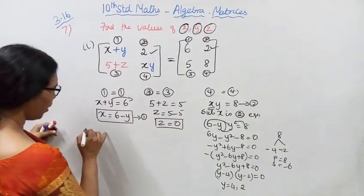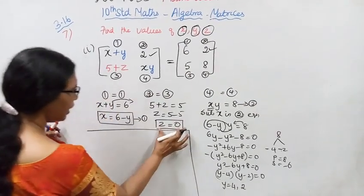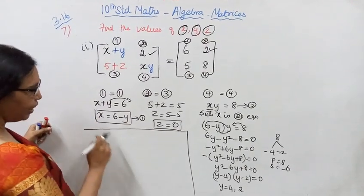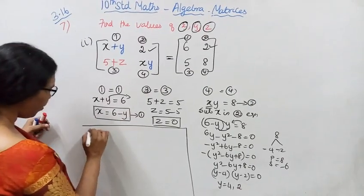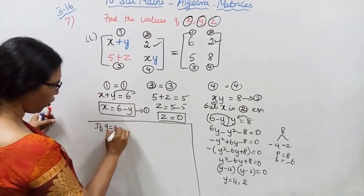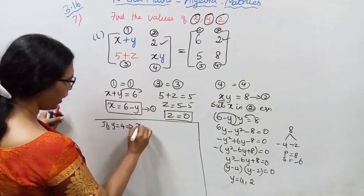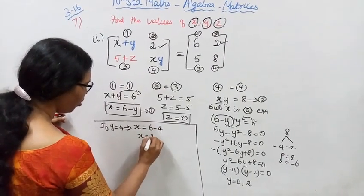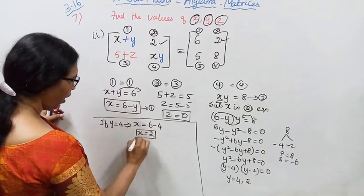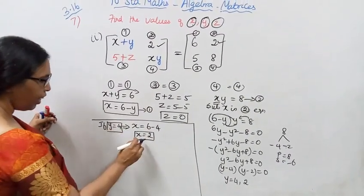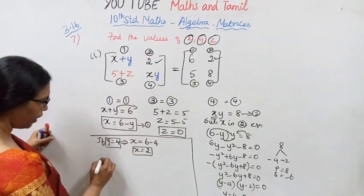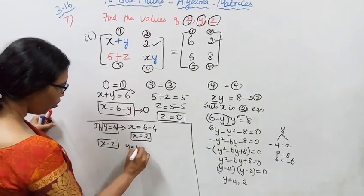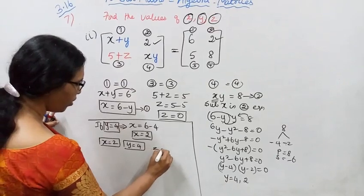When y equal to 4, x equal to 6 minus 4, so x equal to 2. First answer: x equal to 2, y equal to 4, z equal to zero.